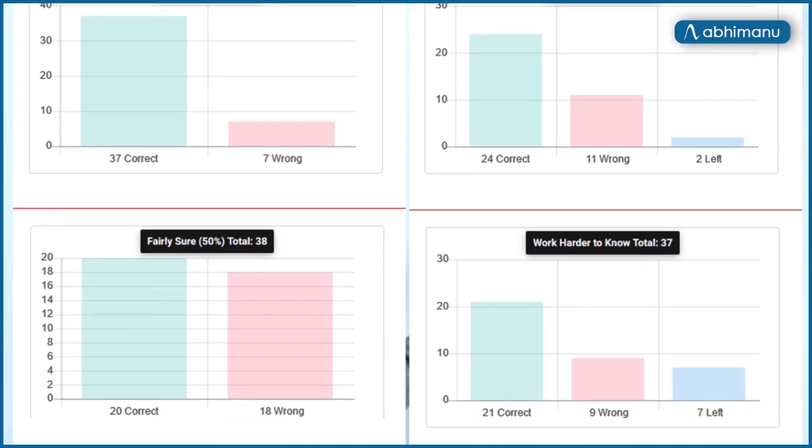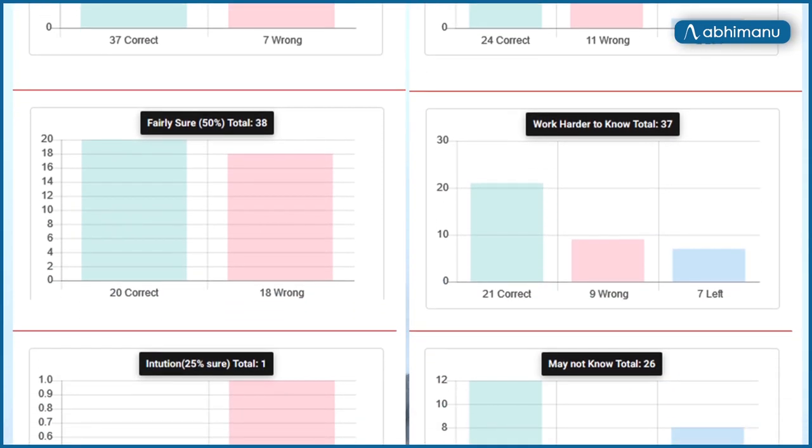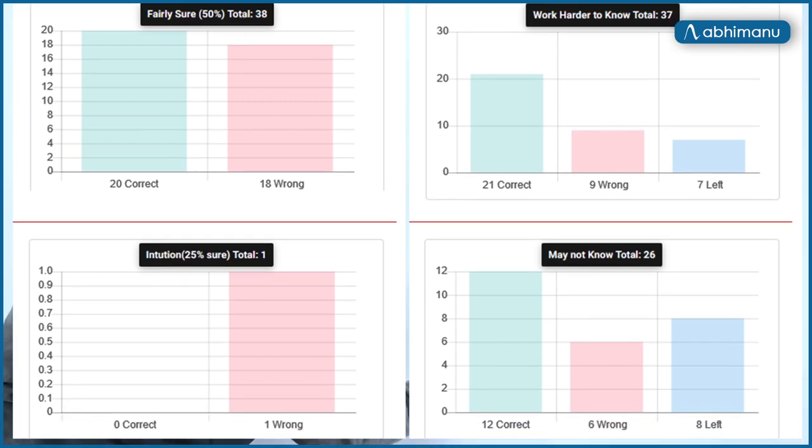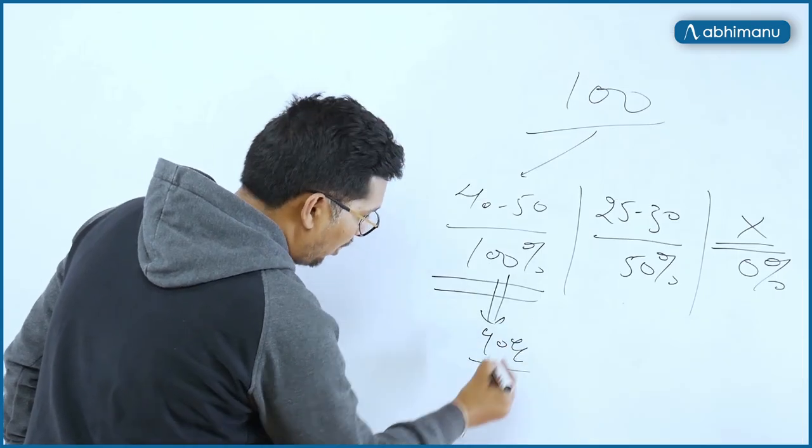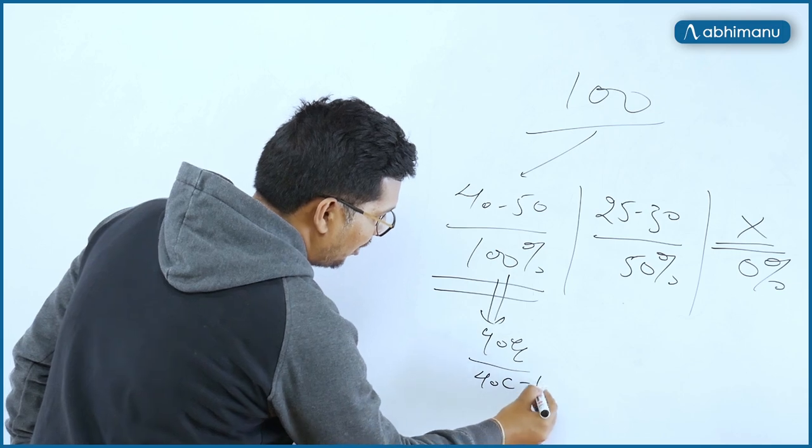Abhimanyu told me in this particular section your accuracy is not actually 100%, it is around 90% where you have only 40 questions correct and 10 incorrect.